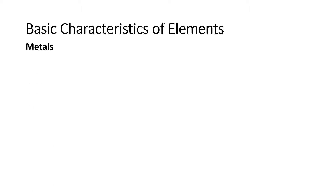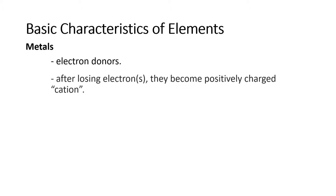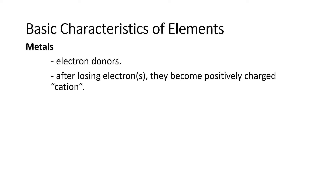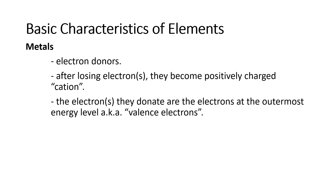We begin with metals. Metals are electron donors. That means they donate electrons or they lose electrons. After losing electrons, they become positively charged and they are now called cations. The electrons that they donate are the electrons at the outermost energy level, also known as the valence electrons.